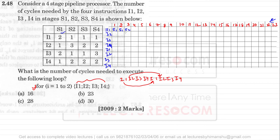Since stage S1 is free at the third clock cycle, instruction I2 can enter S1 at clock cycle 3. Instruction I2 takes one clock cycle in S1, so it moves on. However, I2 takes three clock cycles in stage S2, so it occupies S2 at clock cycles 4, 5, and 6.